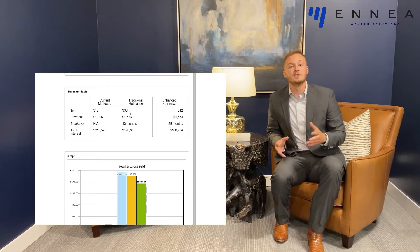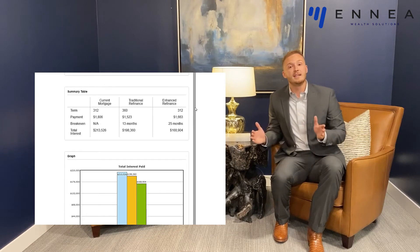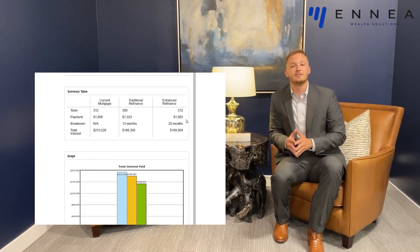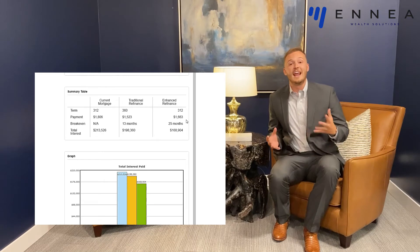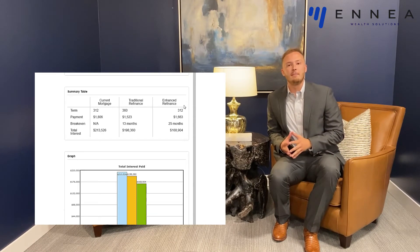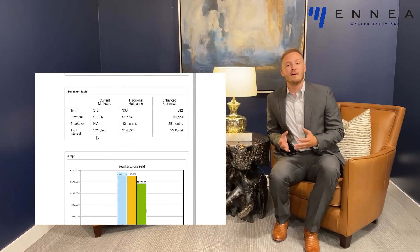The second option is what is called an enhanced refinance. In this case, you're going to take the lower interest rate, reset it to a 30-year mortgage, but pay it as if it were a 26-year mortgage. In the enhanced refinance option, you're going to spend a little bit more on the monthly payment than you would on the traditional 30-year mortgage, but you're going to have a shorter loan term and save about $45,000 over the life of the loan.